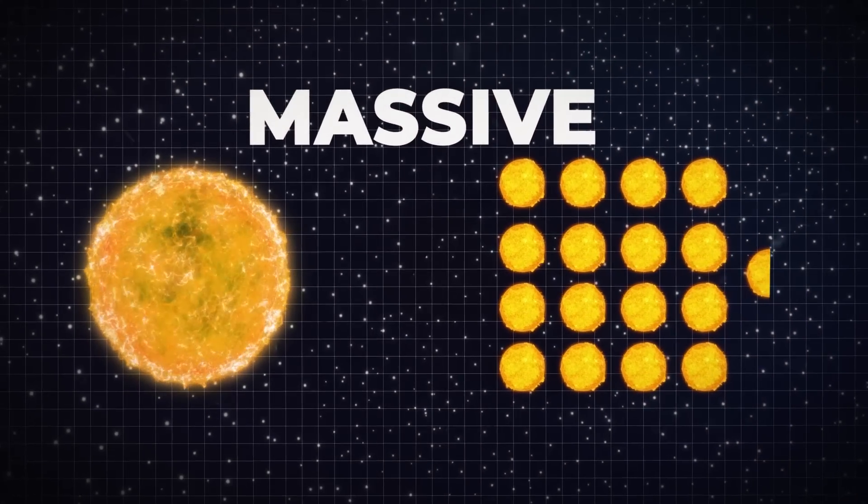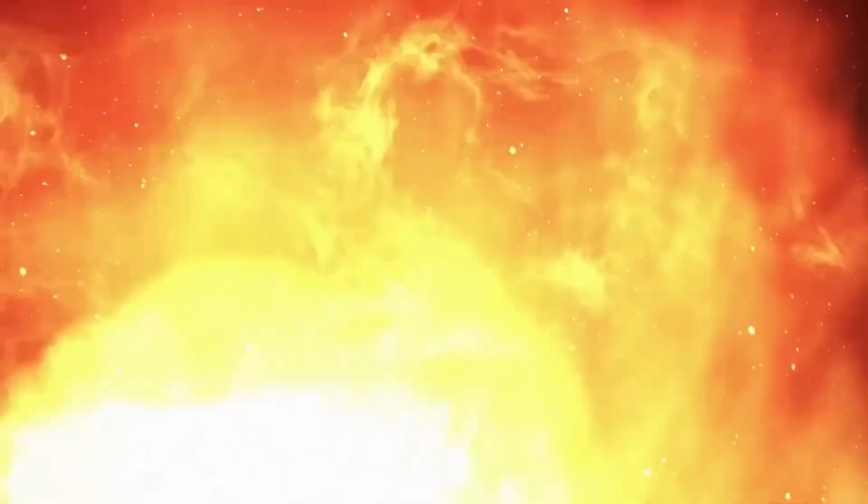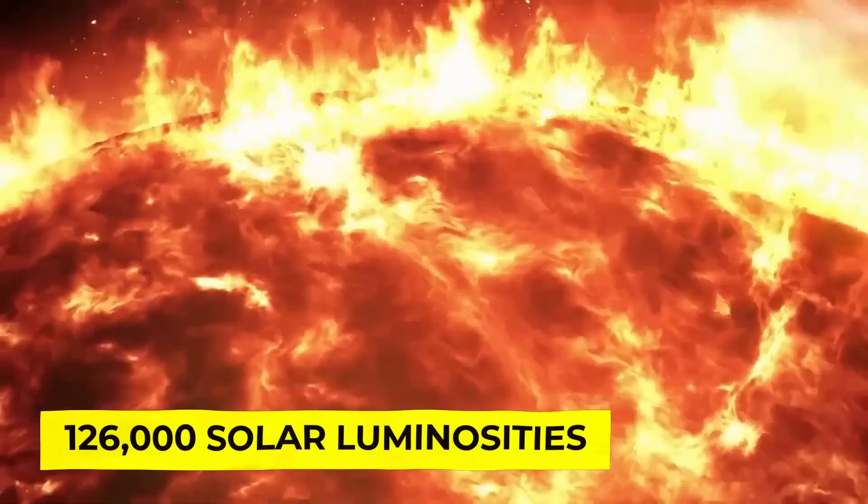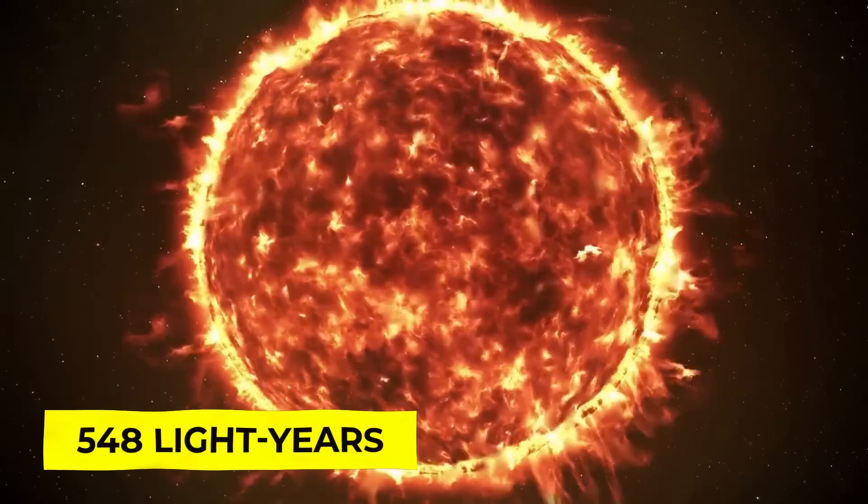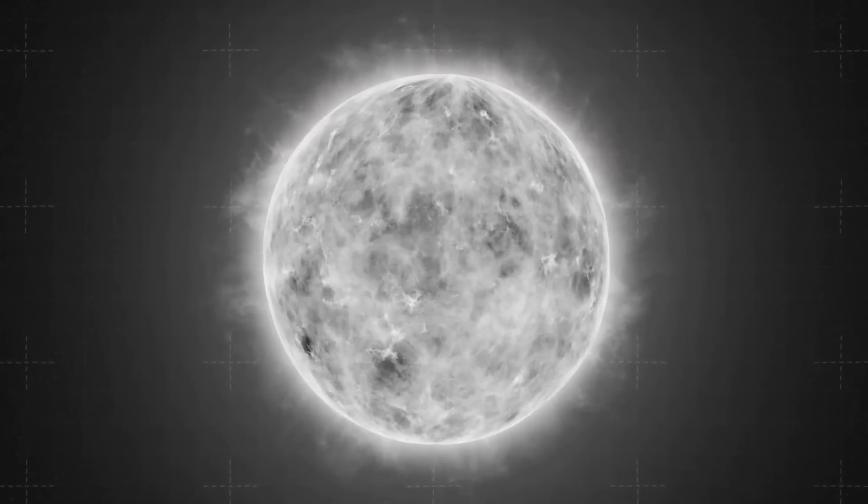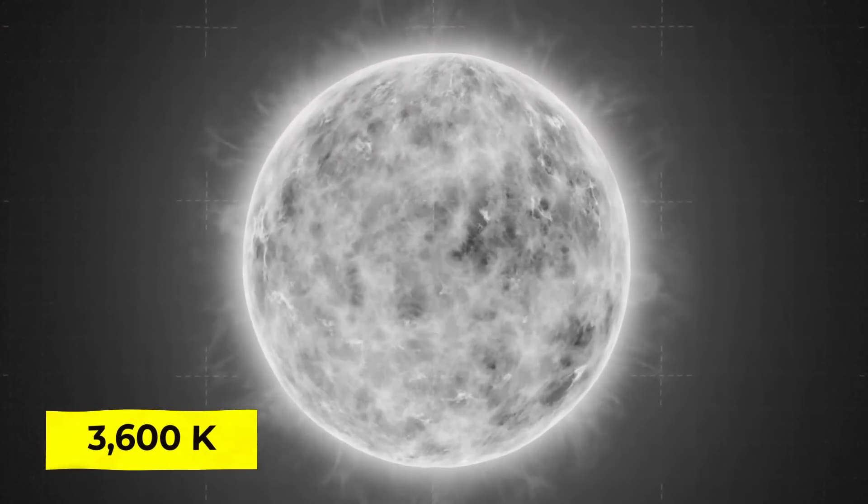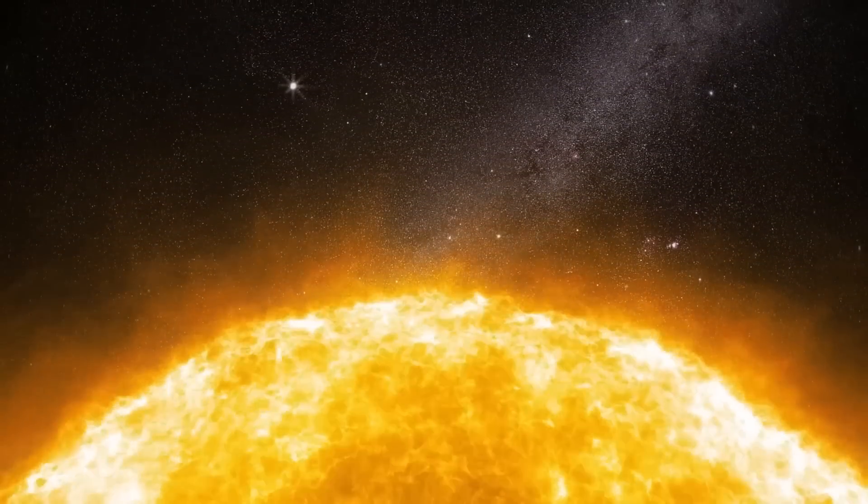Betelgeuse is 16 and a half times as massive as the Sun. This supergiant has 126,000 solar luminosities and is visible from 548 light-years away. This star has a surface temperature of 3,600 degrees Kelvin, making it cooler than the Sun.